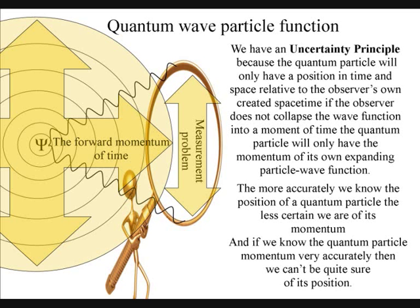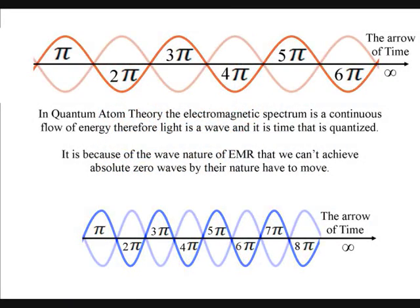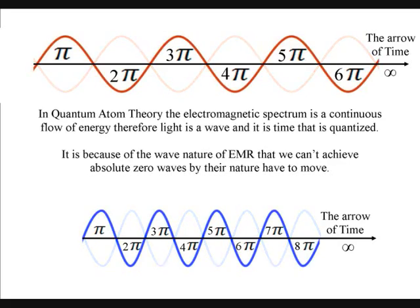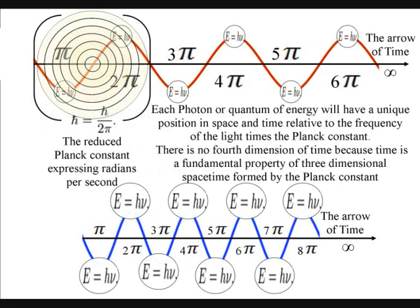Each new photon can be measured either as a point in space over a period of time, or as an area of space at a moment in time, but not as both. This is because the observer is always in the moment of now, collapsing the waves of light into new photons of energy that will only be relative to the wavelength of the light and the position and momentum of the observer.